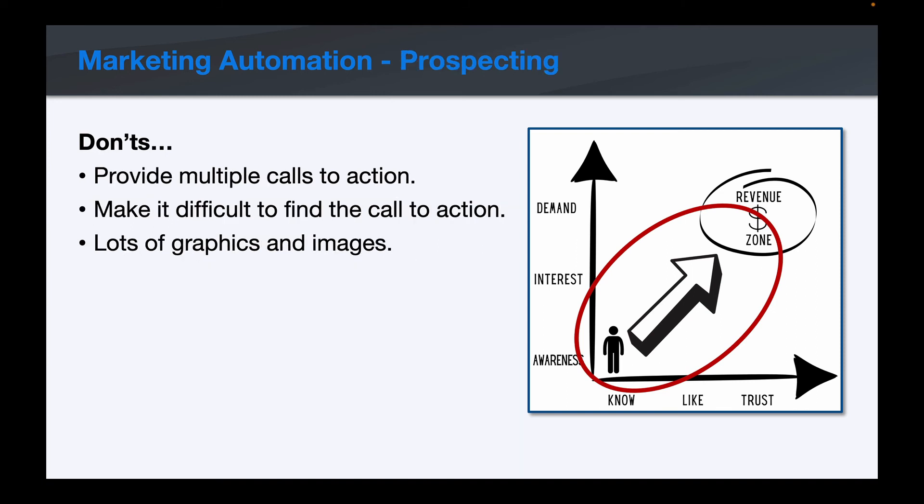Some don'ts: do not provide multiple calls to action in the email. The yellow brick road is designed on a very specific sequence, and if you give the prospect choices and they go off in different directions, that's not guiding them effectively. Don't make it difficult to find the call to action — make it very clear. Just a short summary of what this is about, with a very clear call to action right at the top of the email. Don't make them look for it. And again, avoid lots of graphics and images — keep it very simple and text-based.